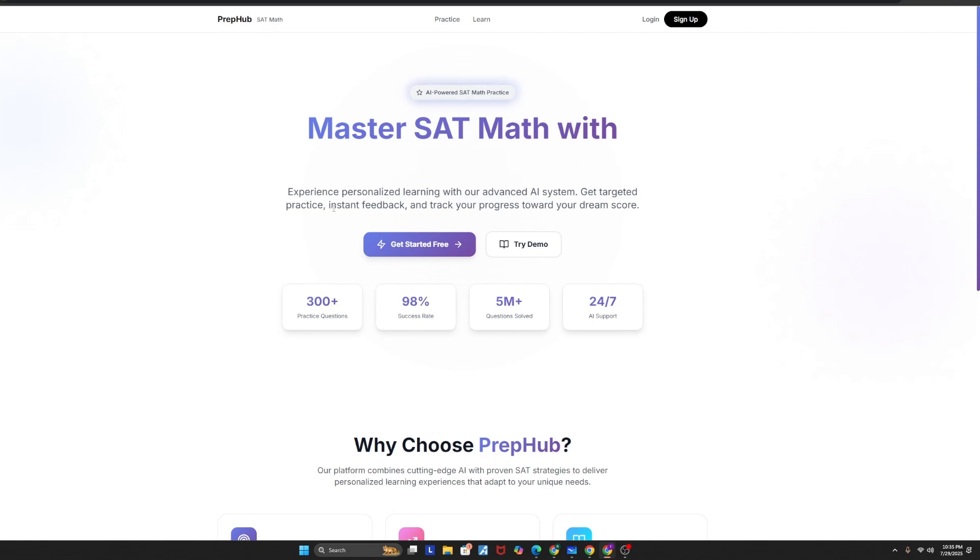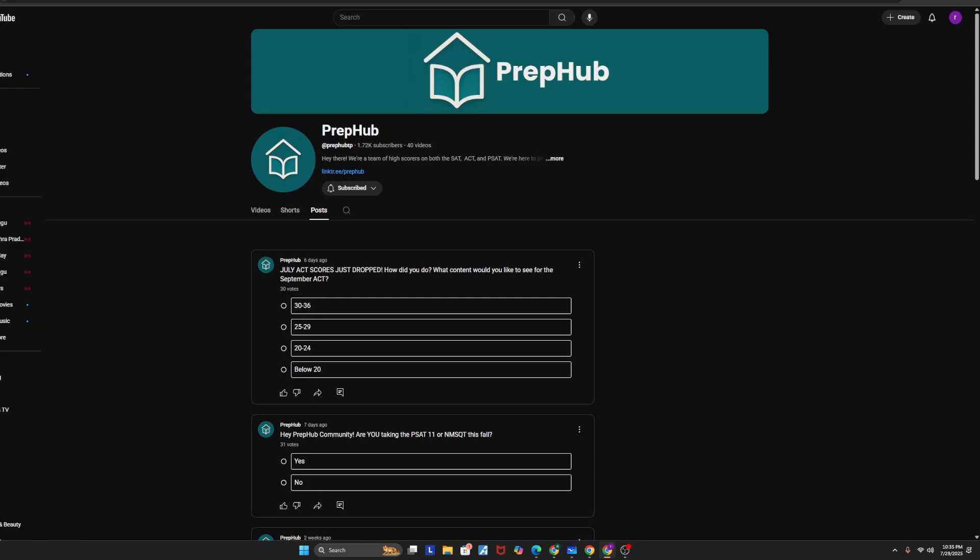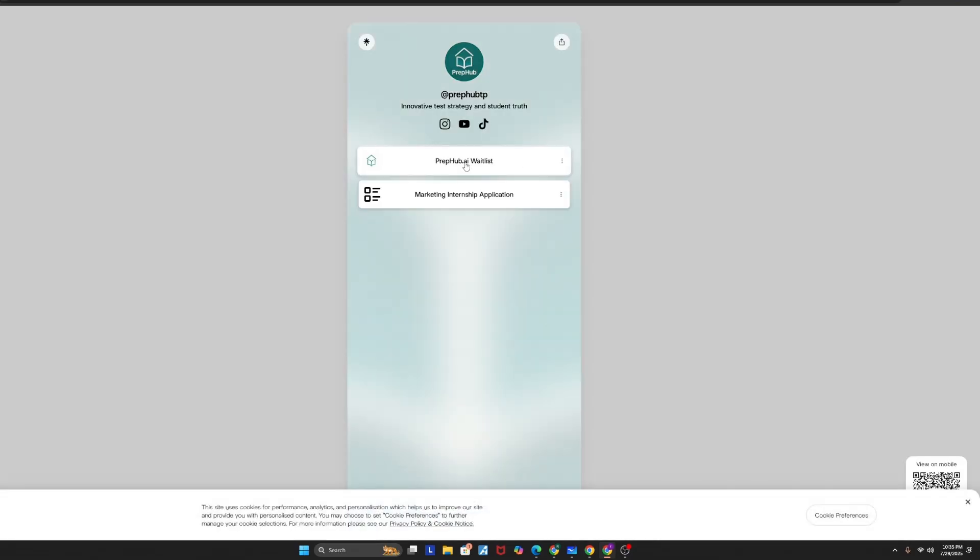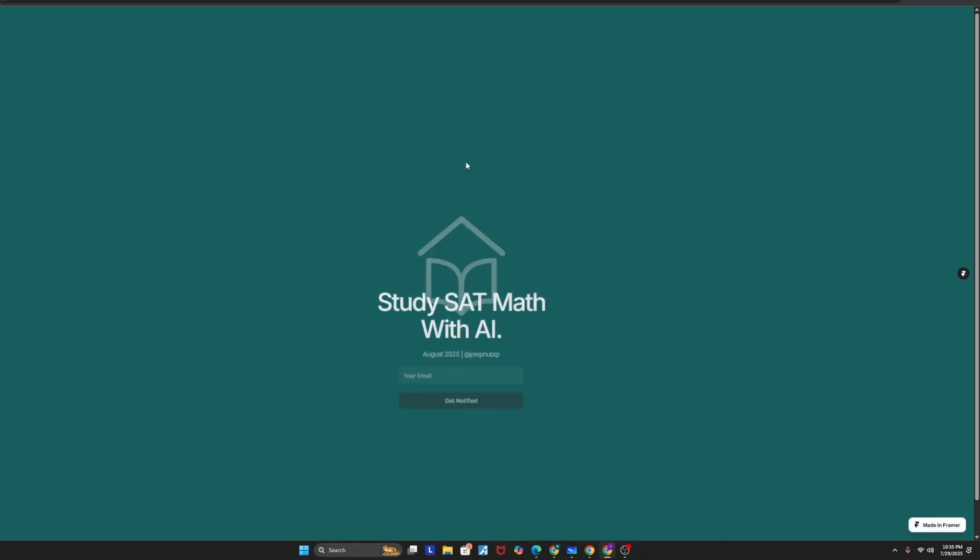PrepHub's very own AI-powered website, where you can get access to over 300 hard and actually tested SAT math questions to boost your score. I know you're dying to learn more, so go ahead, go to our YouTube channel, click the link in our bio, open up that AI waitlist, and enter your email to get notified of everything you need to know about this website. On to the video.